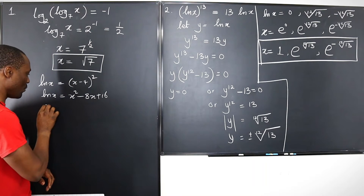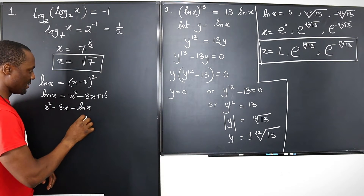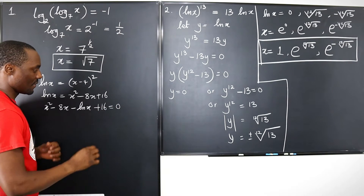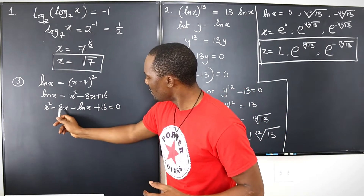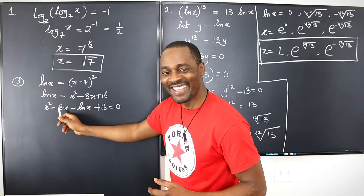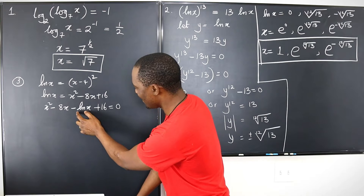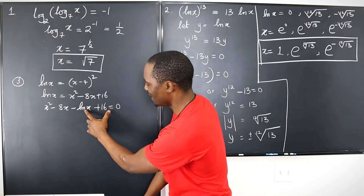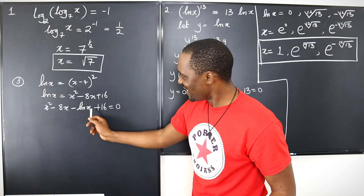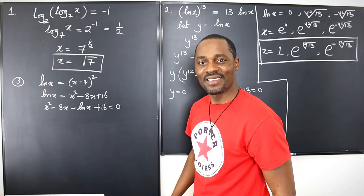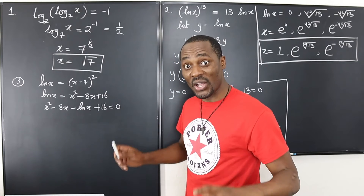Let's try to solve it as if it's a quadratic equation — bring everything to one side. We have x squared minus 8x minus ln(x) plus 16 equals zero. Can we use the quadratic formula? The problem is this is not a standard quadratic because of the ln(x) term — it's impossible to decide how to assign the coefficients. There is no algebraic solution. The only way out is to plot the graph.